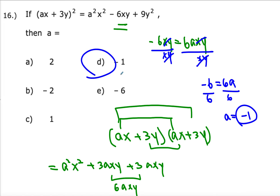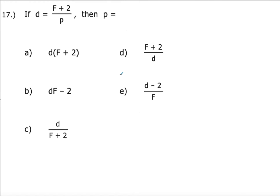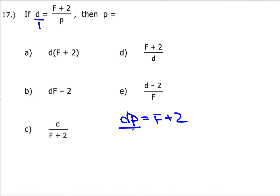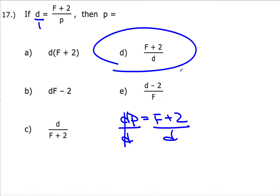Let's move on to number 17. They're looking for the value of p. The easy way is to multiply across, then dp equals f plus 2. Dividing by d gives p equals (f + 2) divided by d, which is choice D.